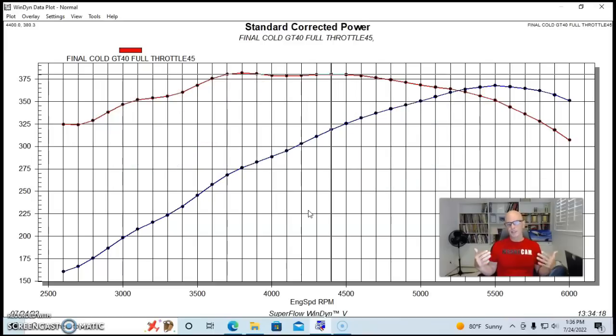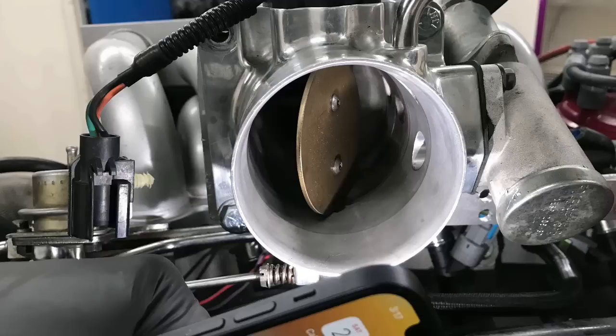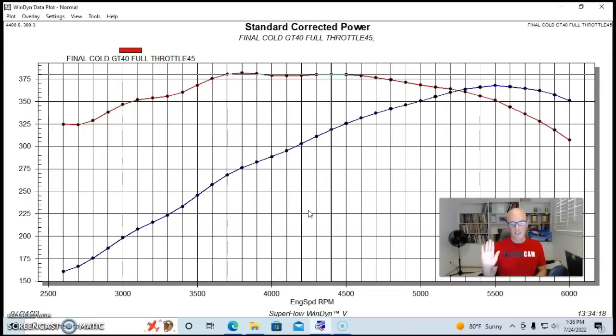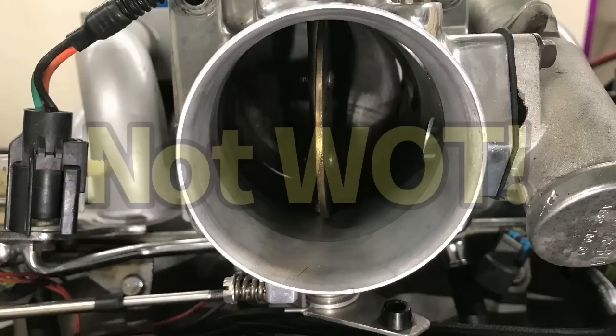So 50% throttle would be something that a normal person would be using a lot out on the street. This kind of simulates you rolling hard into the throttle and taking off and driving around, maybe getting on the freeway, times when you'd be using more than a conservative throttle angle where you're trying to get good fuel mileage, but not jumping on it, going to wide open throttle. If it's an automatic, maybe initiating a kick down in the trans or something like that.